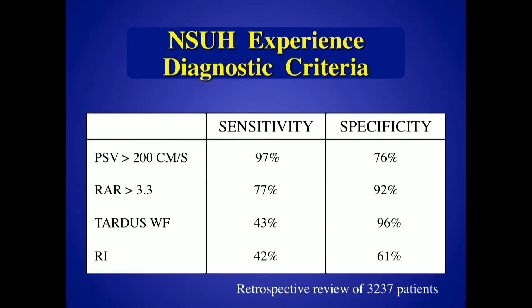Looking at our series, we again found complementary findings — peak systolic velocity is very sensitive; the ratio is very specific. Tardus waveforms are not very sensitive — we do not rely on the indirect exam — but when you see them, they're very specific. By incorporating this information you can have pretty high accuracy. The resistive index I usually don't use, because it's like flipping a coin — it plays no part in trying to determine if the patient has an underlying stenosis.